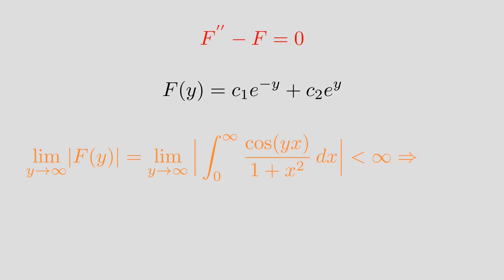We have seen that F of zero is pi over two. When we put this in our expression this will give us that c1 is pi over two.